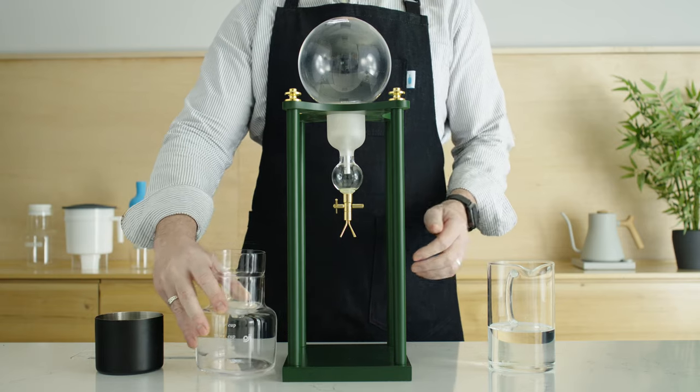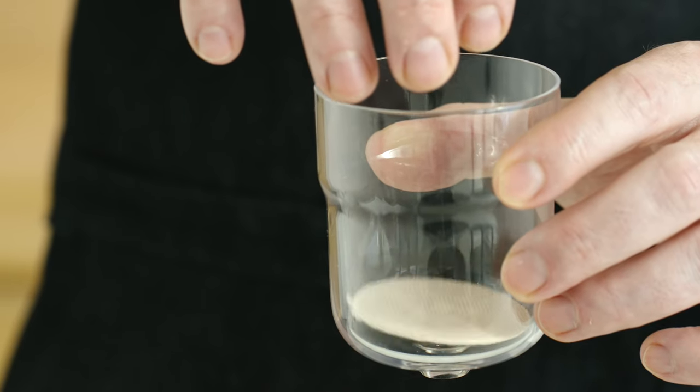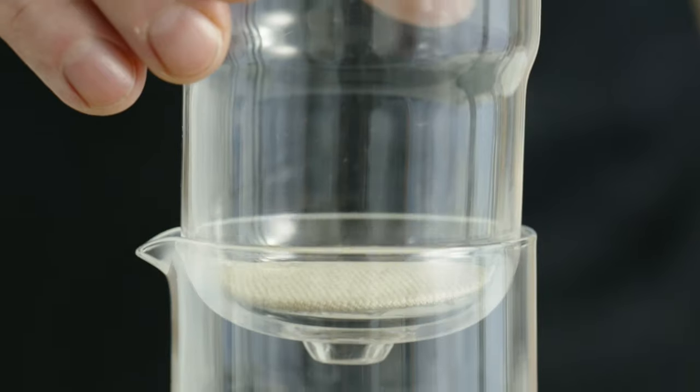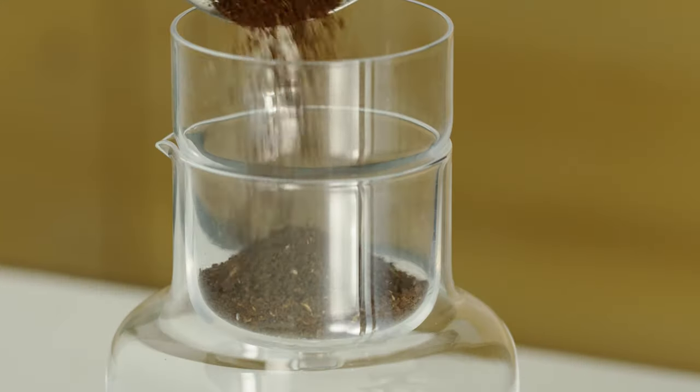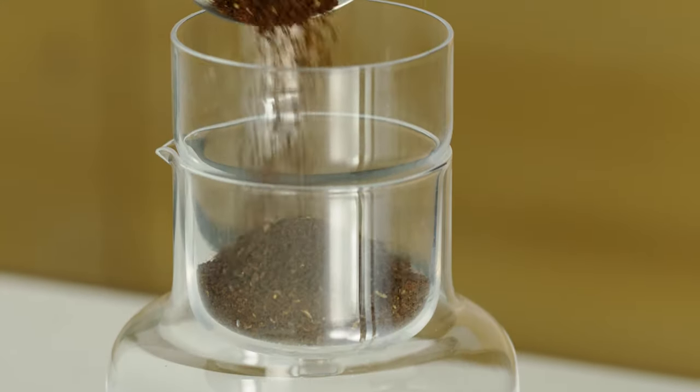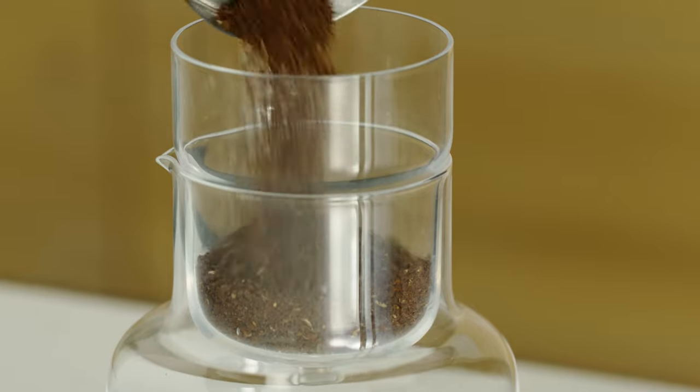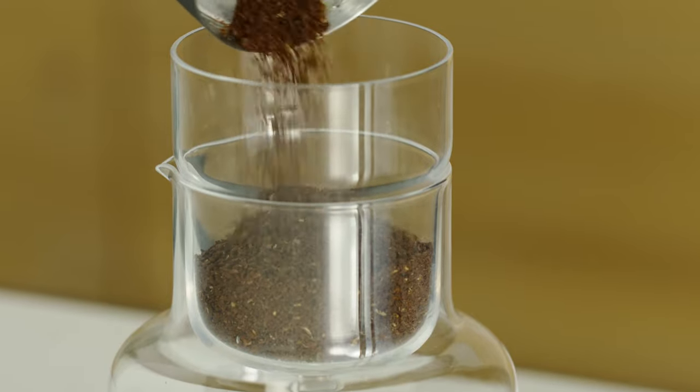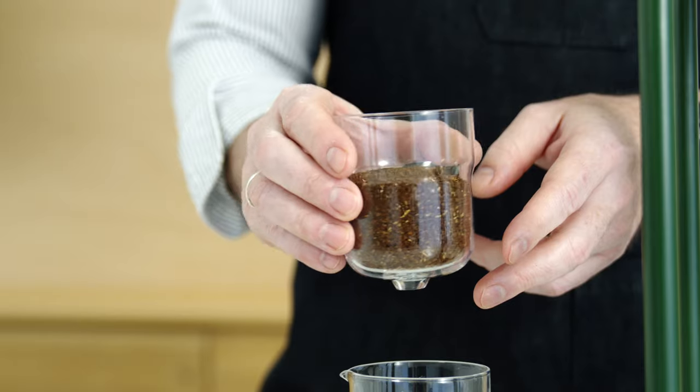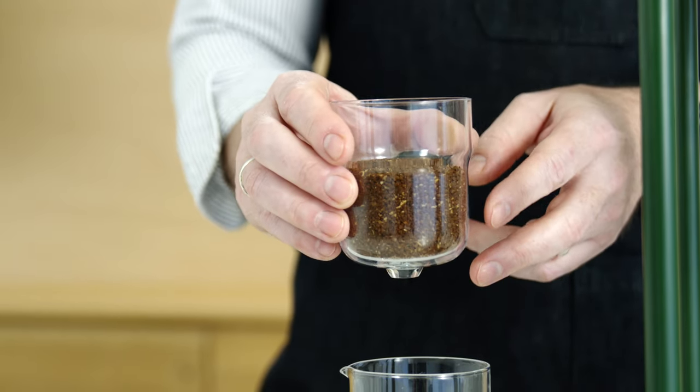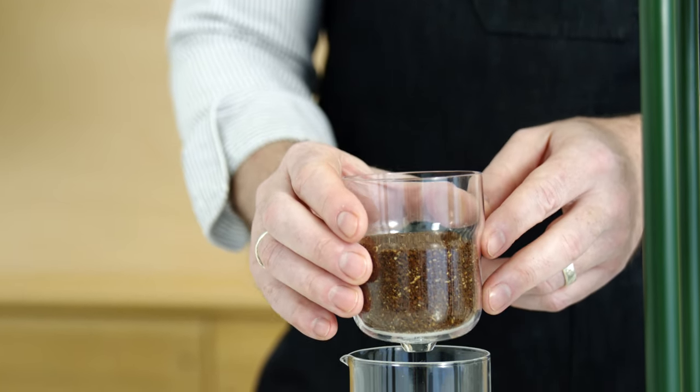First, remove the carafe and lift out the grounds chamber, then place the filter flannel side up. Now add 35 grams of freshly ground coffee. You want to grind your beans about as coarse as you would for a French press or Chemex. Give the grounds chamber a gentle shake to level the coffee, and then nest it back into the carafe.